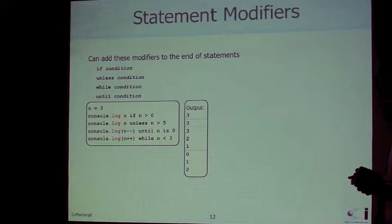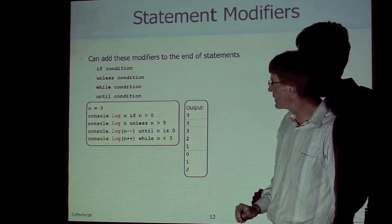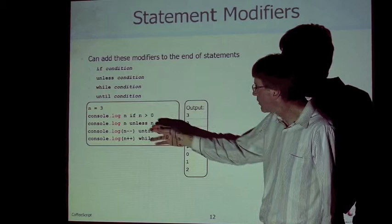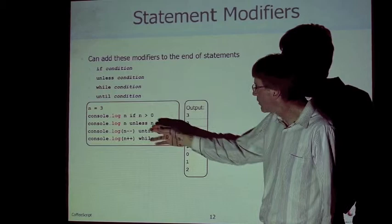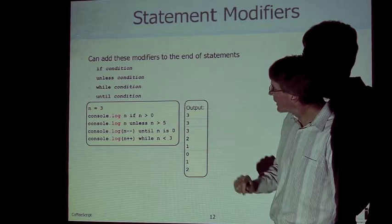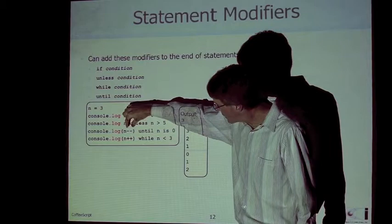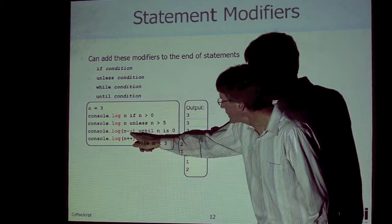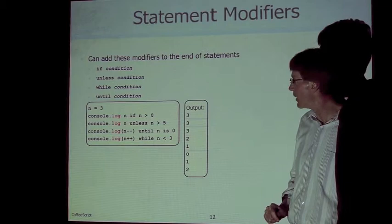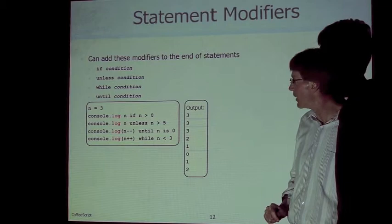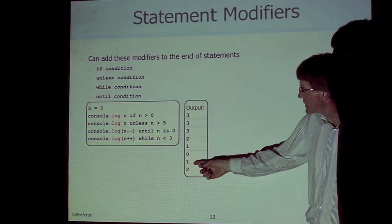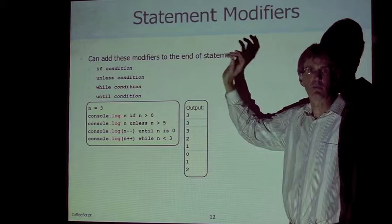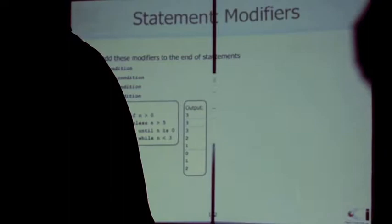CoffeeScript supports statement modifiers, just like Ruby — so if, unless, while, and until can all go at the end of some other statement. For example: print out n if n is greater than zero; print out n unless n is greater than five. For looping: print out n-- until it's zero, which decrements and prints 3, 2, 1 and stops at zero. Then loop while it's less than three. It's a convenient way to do a lot in one line of code; in JavaScript these would come first with curly braces and end up being three lines.